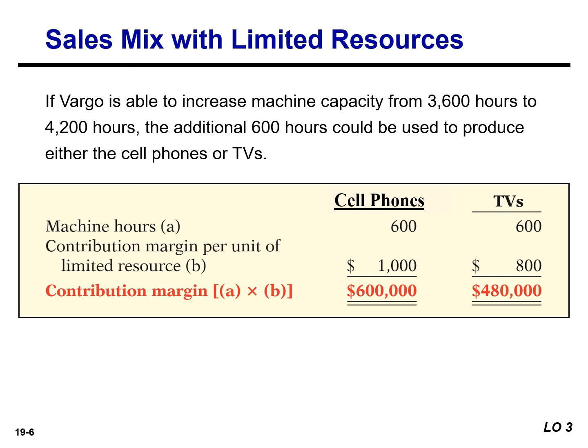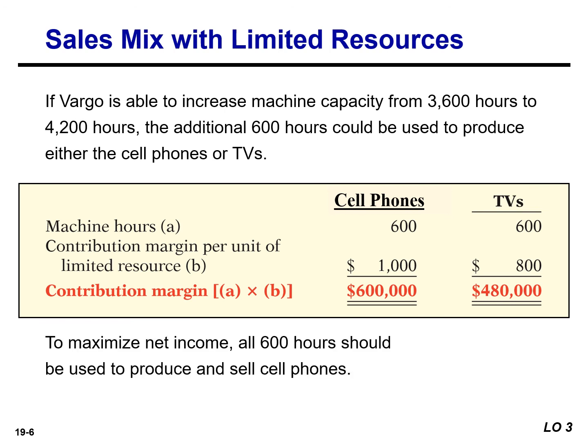From this analysis, we can see that to maximize net income, all of the increased capacity should be used to make and sell the cell phones. If you would like to practice this concept, please reference the textbook for the Just Do It exercise.